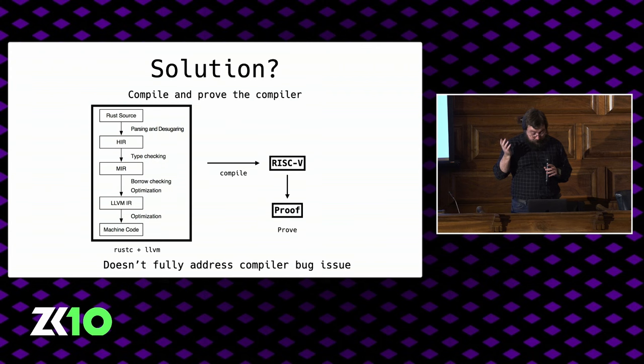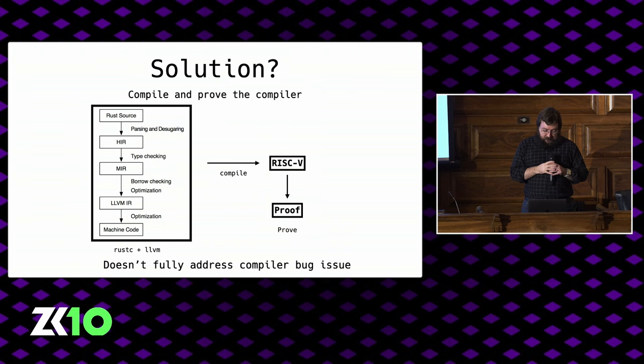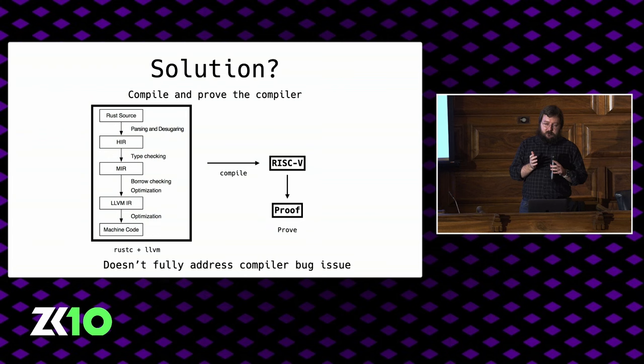One solution is we could actually prove the compilation step. ZKVMs are universal — Rust's compiler is written in something that can compile through LLVM to RISC-V. We could just compile everything to RISC-V and run the entire Rust compiler and LLVM toolchain. This is really expensive — probably way too expensive for most purposes. And it doesn't really address the issue of compiler bugs. It just maybe gives the verifier a fighting chance to replicate that computation and see exactly what the prover meant.